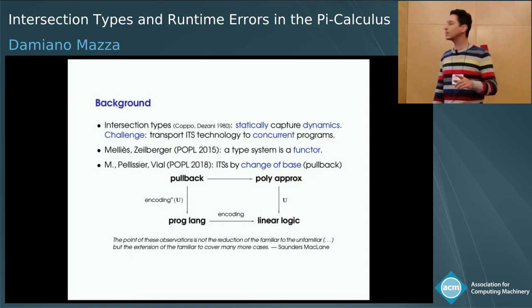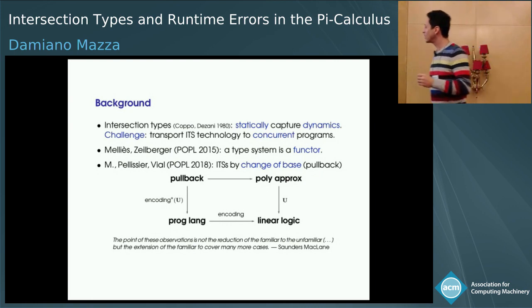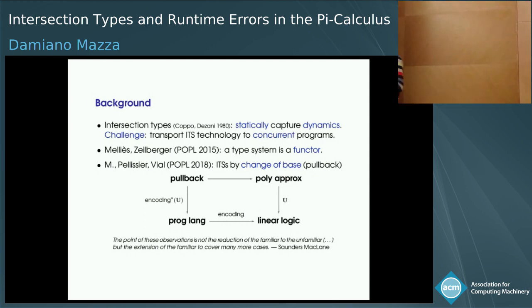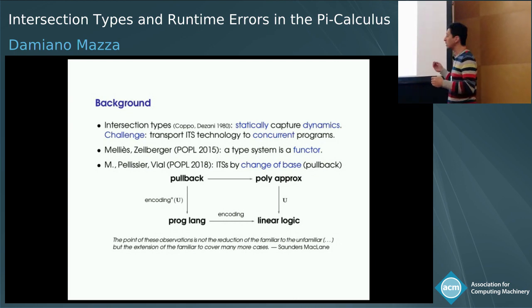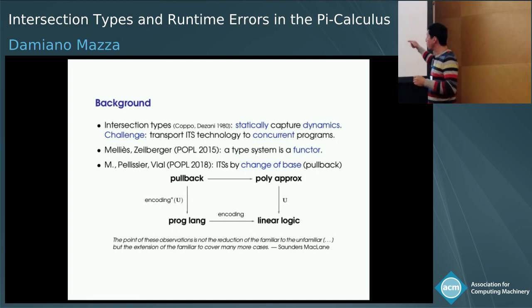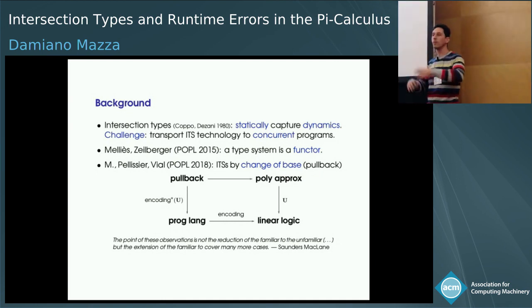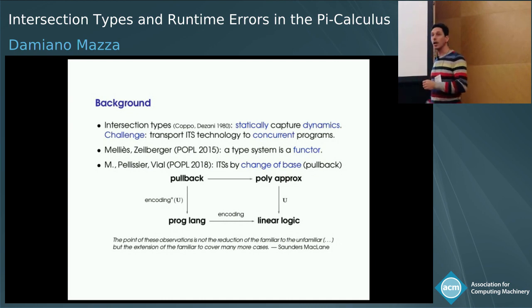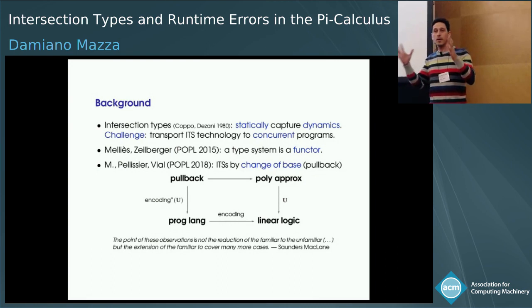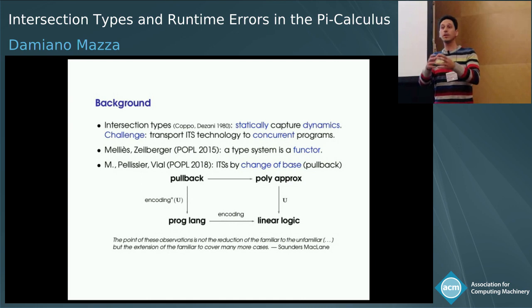If you were there last year, this is the talk in half a slide. The idea is that for every flavor of intersection types, there is a sort of universal intersection type system — that functor U — for linear logic. And all well-known intersection type systems for the lambda calculus, the lambda mu calculus, the call-by-value lambda calculus, whatever, arise by pulling back that universal intersection type system along an encoding of that programming language into linear logic. This is extremely powerful because as soon as you have a meaningful encoding of your favorite programming language in linear logic, you have an intersection type system for it.